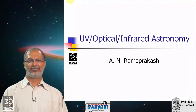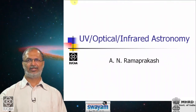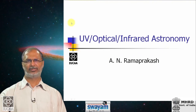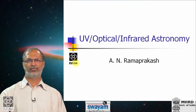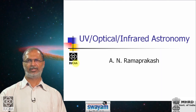Hello everybody, my name is Ramaprakash. I am an astronomer working at the Inter University Center for Astronomy and Astrophysics in Pune. My basic interests are in building instruments for astronomy — various kinds of instruments like telescopes, spectrographs, cameras, polarimeters, etcetera. Today I would be talking about infrared, optical, and UV astronomy.